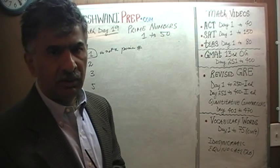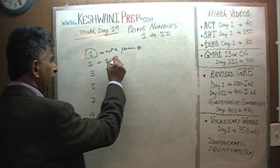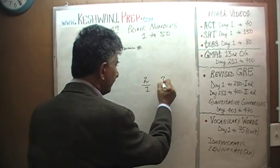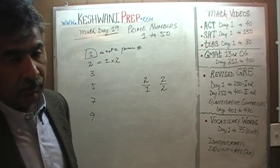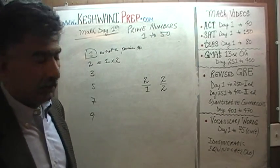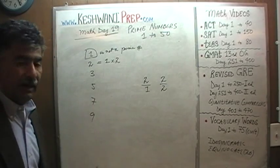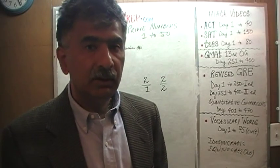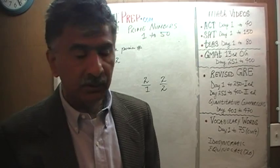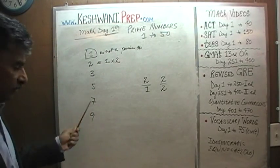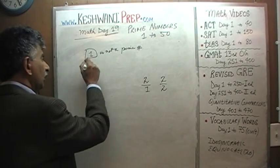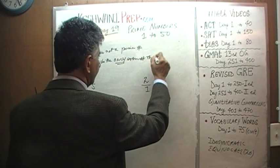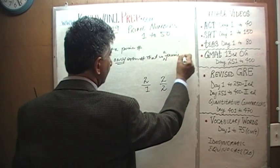2 meets that condition. It meets that condition because 2 has only two factors: 1 and 2. The only number we can divide 2 by is 1 and itself. That is the definition of a prime number — a prime number is one that can be divided only by itself and 1. Therefore, 2 qualifies as a prime number even though it's an even number. It is the only even number that is a prime number.